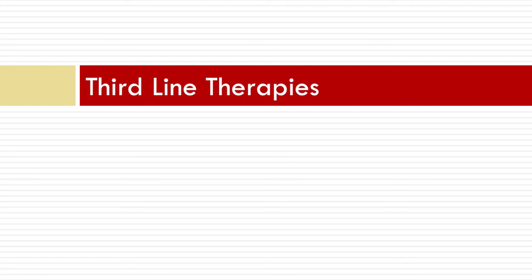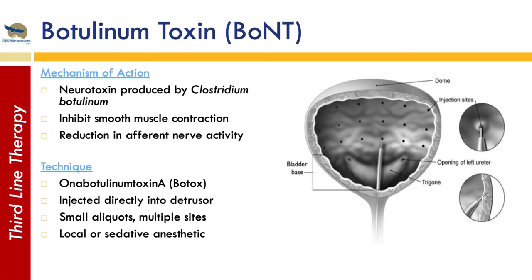Now we'll talk about third-line therapies for when pharmacological therapies are intolerable due to side effects or don't give enough symptom relief. First, botulinum toxin: this is a neurotoxin produced by Clostridium botulinum, and the one we primarily use is botulinum A. It inhibits smooth muscle contraction and thereby reduces afferent nerve activity and feedback to the micturition center. It's injected into the detrusor in small aliquots, usually about 100 to 200 units at multiple sites, typically under just local sedation — it can be done in the office.